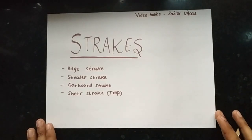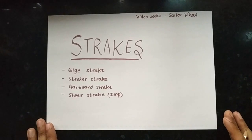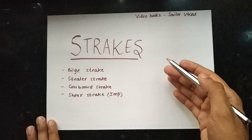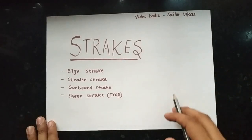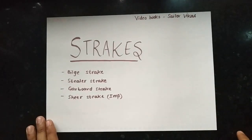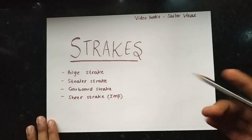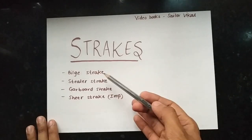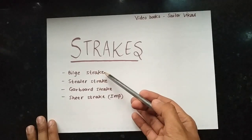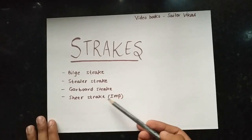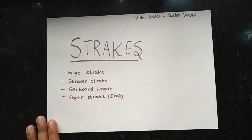Hello guys, today's topic is: what are strakes? Strakes are a part of ship construction and play a very important role. In this topic we're going to discuss what is a strake, what is a bilge strake, what is a steeler strake, what is a garboard strake, and what is a shear strake — and why shear strake is more important than any other strake.